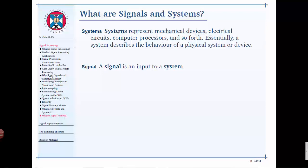Just to wrap some of this up, this is an overview of everything. A system represents a mechanical device, an electrical circuit, a computer processor, or a DSP. Essentially, a system describes the behavior of a physical system. A system can exist with no signals going through it. A signal is an input to the system and is also an output.